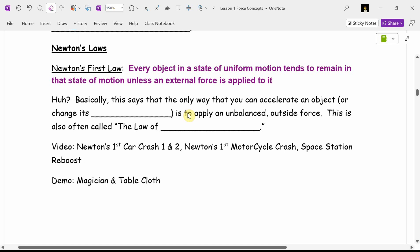I went on a big rant last year about Newton's laws. So Isaac Newton said, I can explain how everything in the universe moves with three rules, three laws. The first law often says objects at rest tend to remain at rest. Objects in motion tend to remain in motion. Or every object in a state of uniform motion tends to remain in that state of motion unless an external force is applied to it. And basically it says the only way that you can accelerate an object or change its velocity is to apply an unbalanced outside force.